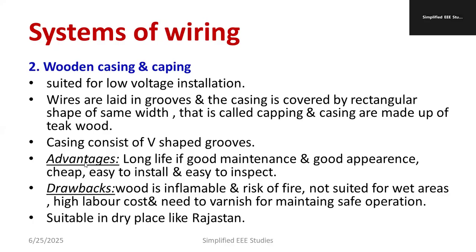The advantages of casing and caping wiring include long life, good appearance, and easy installation and inspection. The major setbacks are that wood is highly inflammable, creating a fire risk; it is not suited for wet areas as the wood gets spoiled; high labor cost is needed for installation; frequent varnishing and maintenance are necessary. It is suitable for dry places such as desert areas like Rajasthan.